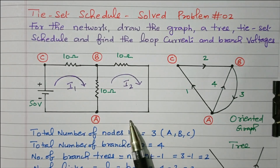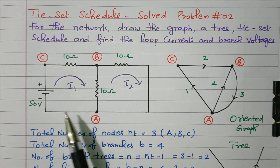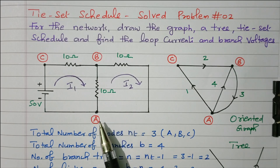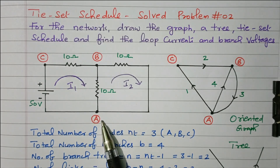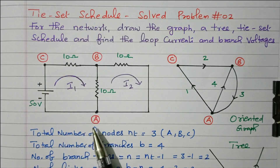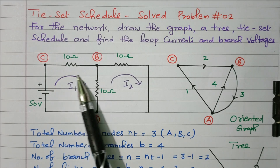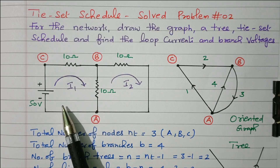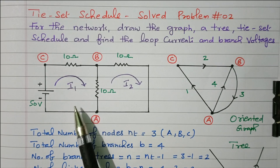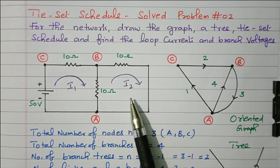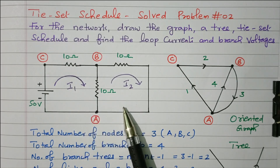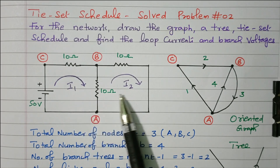This is the given network. A network is nothing but the combination of elements — here we have a voltage source and resistors. There are three nodes: A, B, and C. A node is a junction where elements are connected together. There are two closed loops available. The current I1 flows through the first closed loop and I2 through the second. So three nodes, two loops, and loop currents I1 and I2.